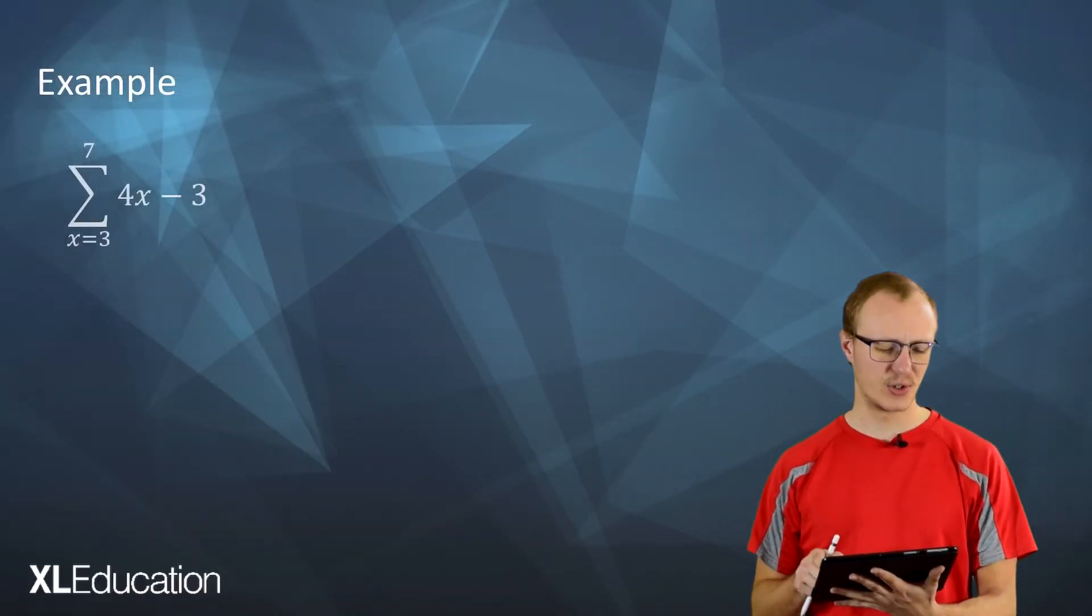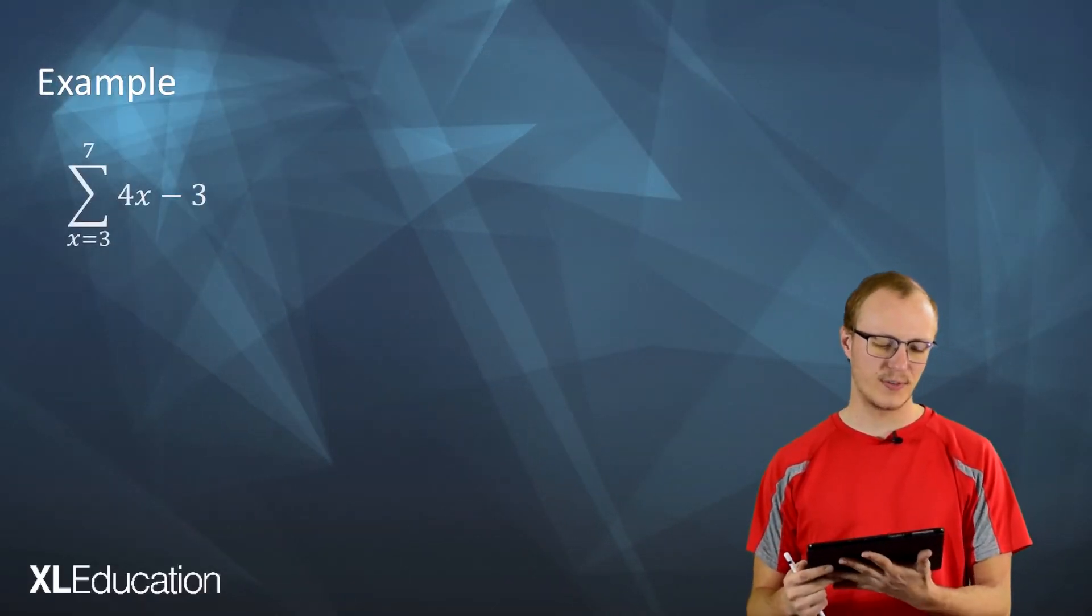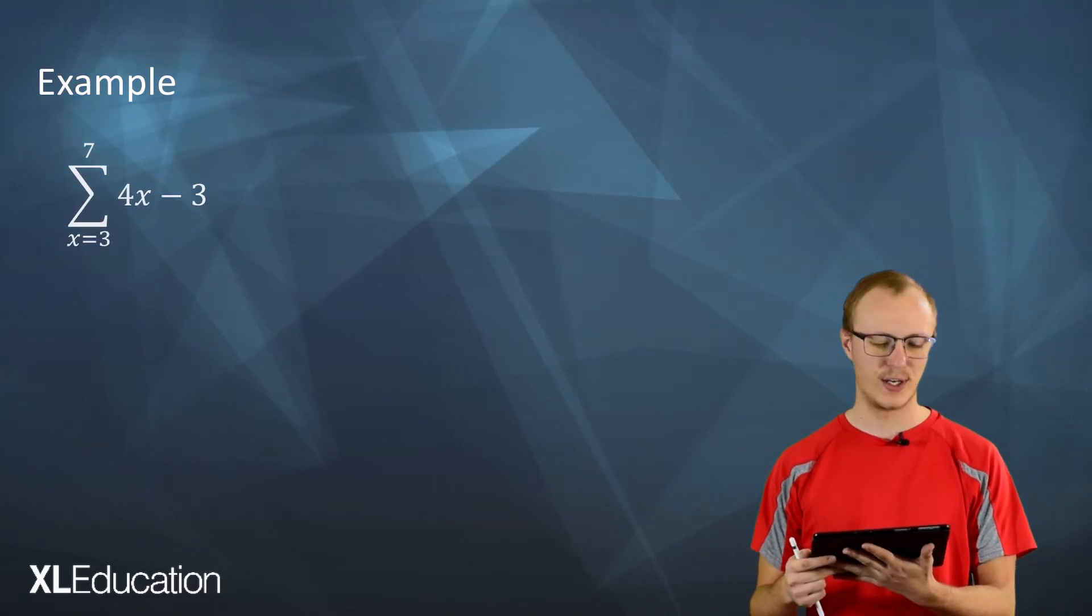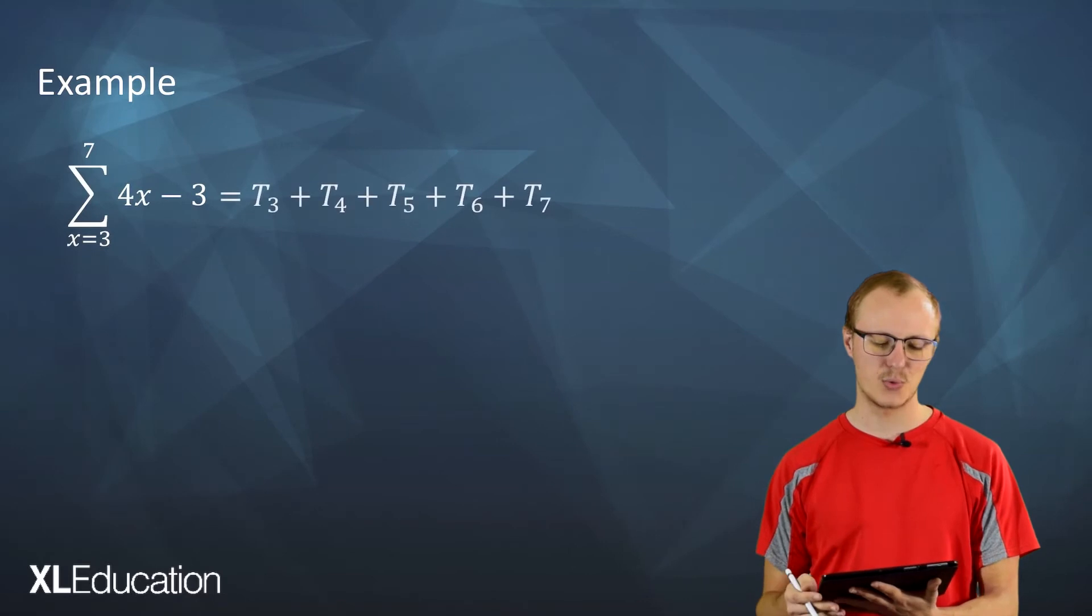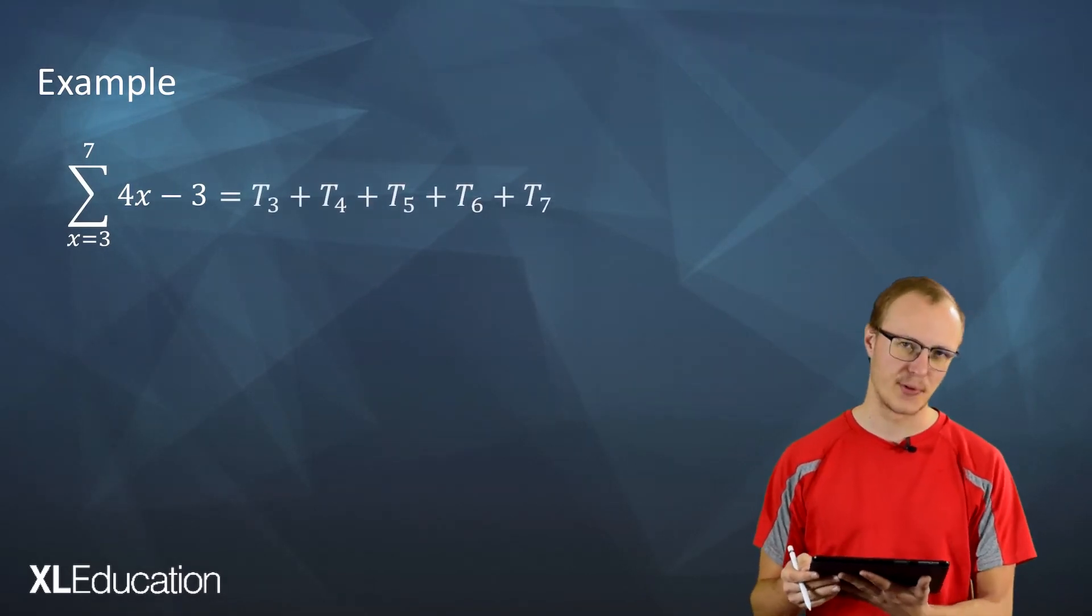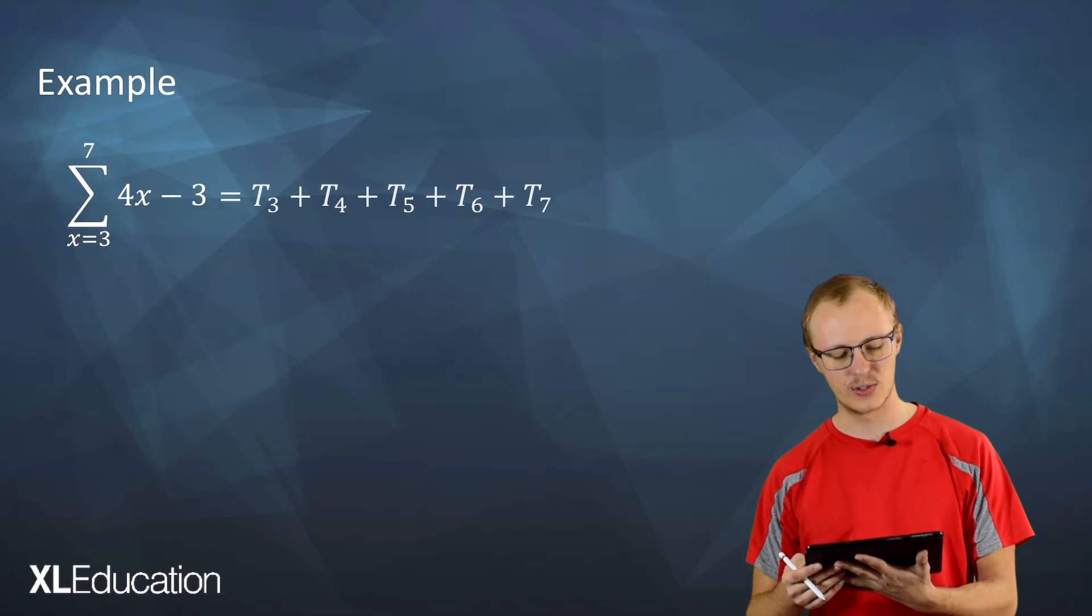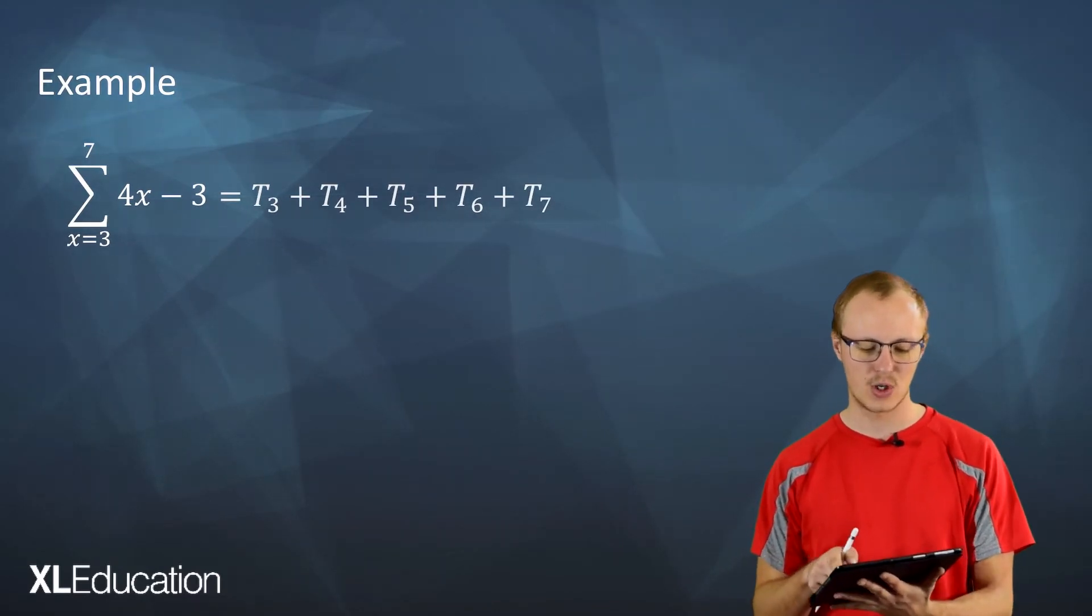So let us do an example. There we've got the sigma from x equals 3 to 7 of 4x minus 3. What does that mean? It means we're going to add up from term 3, that bottom term there, all the way up until term 7, the number at the top.